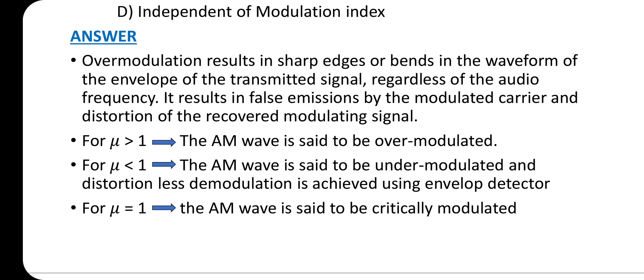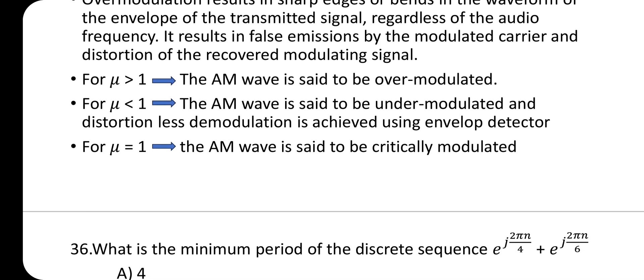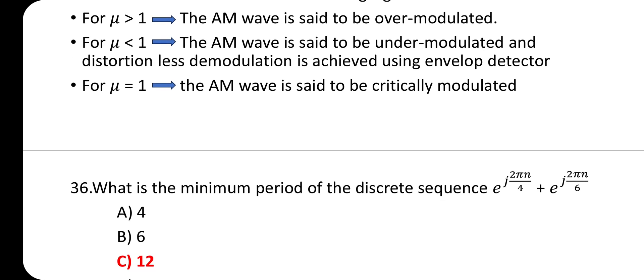Overmodulation results in sharp edges or bends in the envelope of the transmitted signal, regardless of audio frequency. It causes false emissions and distortion of the recovered modulating signal. For μ > 1, the AM wave is overmodulated. For μ < 1, the AM wave is undermodulated and distortion-less demodulation is achieved using envelope detector. For μ = 1, the AM wave is critically modulated.